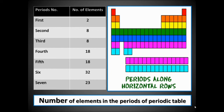Observe this diagram showing periods one to seven, with each period having a different number of elements. The number of elements per period in the periodic table: first period 2, second and third 8, fourth and fifth 18, sixth 32, and seventh still incomplete.